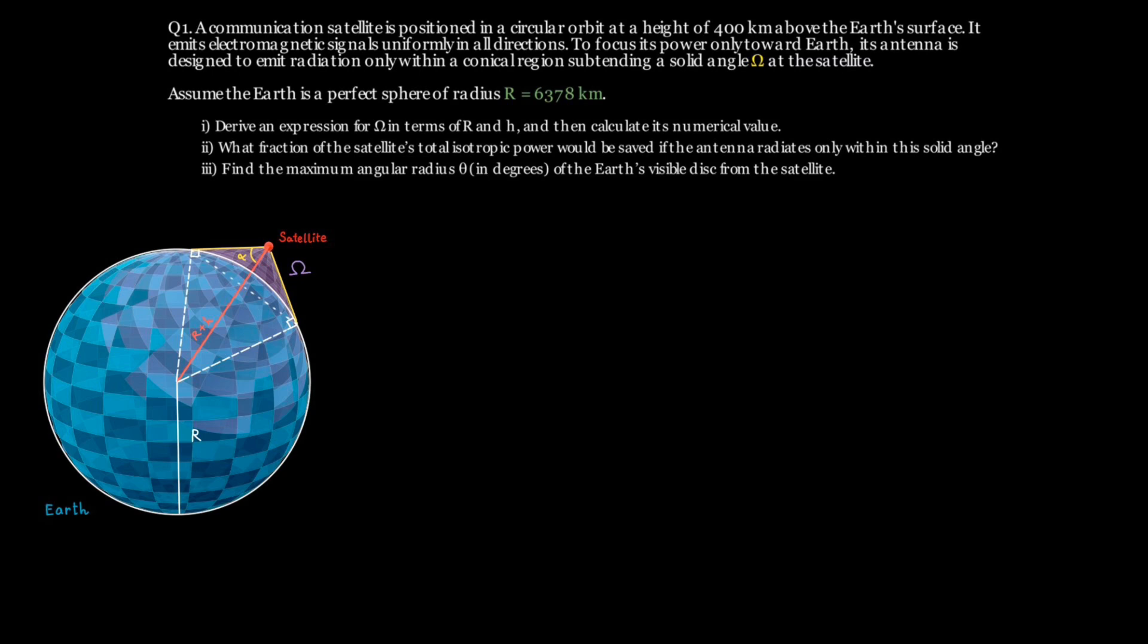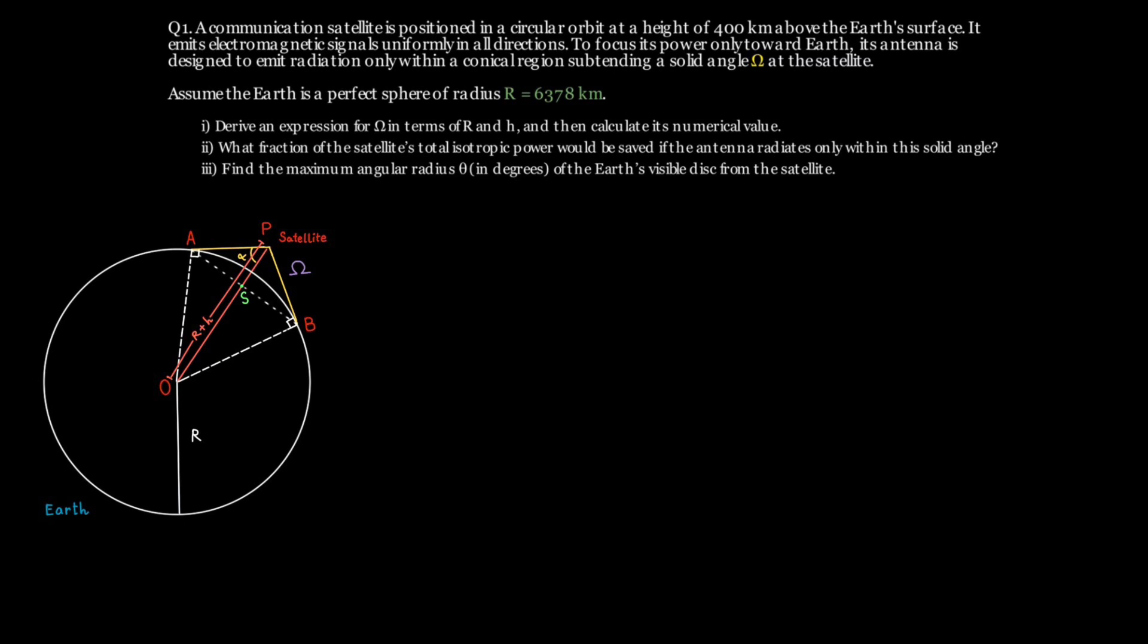Let's label all these points for convenience. The center of the Earth is at O, the satellite at point B. A and B are the points where the cone touches down on the Earth. S marks the midpoint of the line joining them. And this gives us our final geometry.